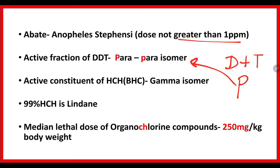The active constituent of HCH is the gamma isomer. 99% gamma isomer of HCH is called Lindane. It is like remembering the Lysol advertisement — they say 99.9%. So remember Lysol for Lindane, which is 99% gamma HCH.